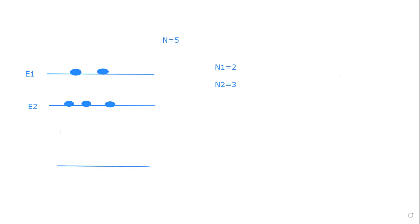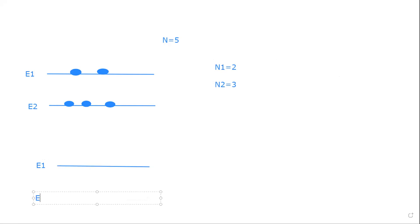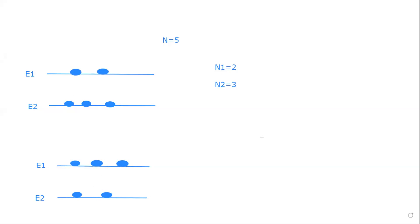So after certain time, consider two energy states. After a certain time, E1 will have three particles. Because of a change in energy, one particle goes to E1, and in E2 two particles remain. Going from this particular microstate to this particular microstate — from this situation to this microstate.